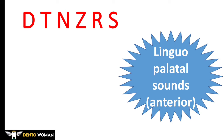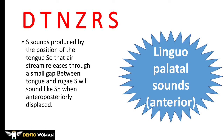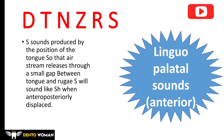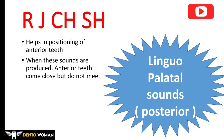Lingua palatal sounds from the anterior palate: when the tip of the tongue contacts the anterior portion of the palate or the lingual side of the anterior teeth. These are also known as lingual alveolar sounds, and include D, N, Z, R, S sounds — produced by the position of the tongue so that the air stream releases through a small gap between the tongue and the ridge. S will sound like SH, meaning 'sip' will sound like 'ship,' when anteroposteriorly displaced.